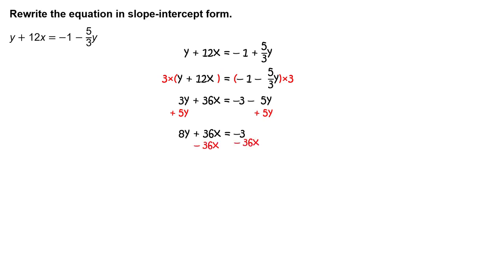Subtract 36x from each side of the equation. Simplify to get 8y equals negative 36x minus 3.